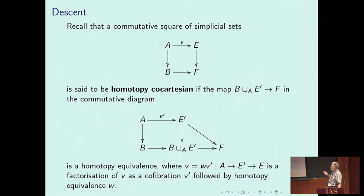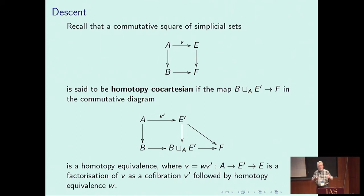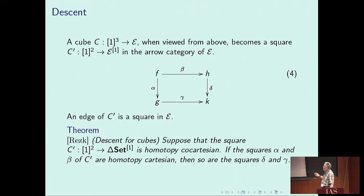Now I would like to describe descent. I need to recall what a homotopy pushout square is — a homotopy co-Cartesian square, the dual of a homotopy Cartesian square. I need to move out of the theory of tribes momentarily, thinking in a model category like simplicial sets. Given a cube in a category E, the cubical descent property can be described: if you look at the cube from above you see a square, with vertical faces α, β, γ, δ.